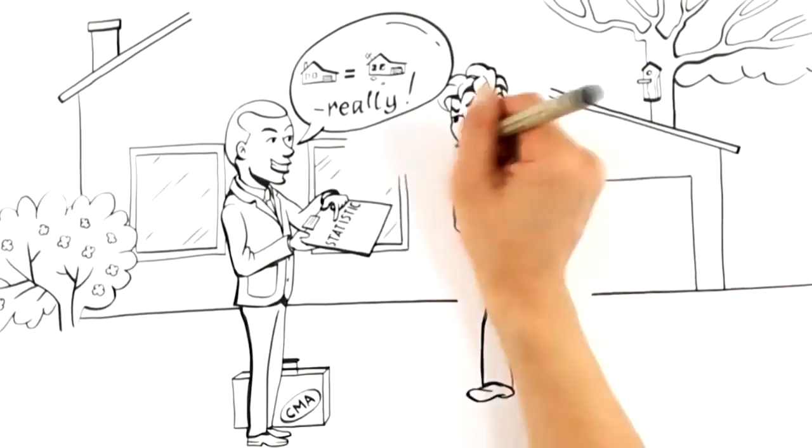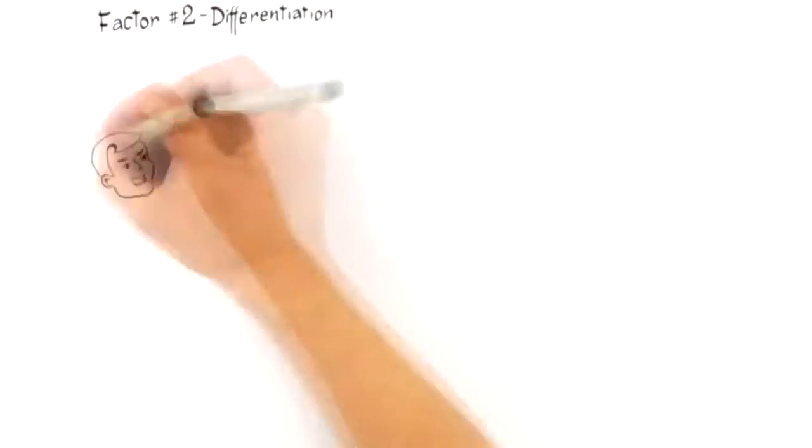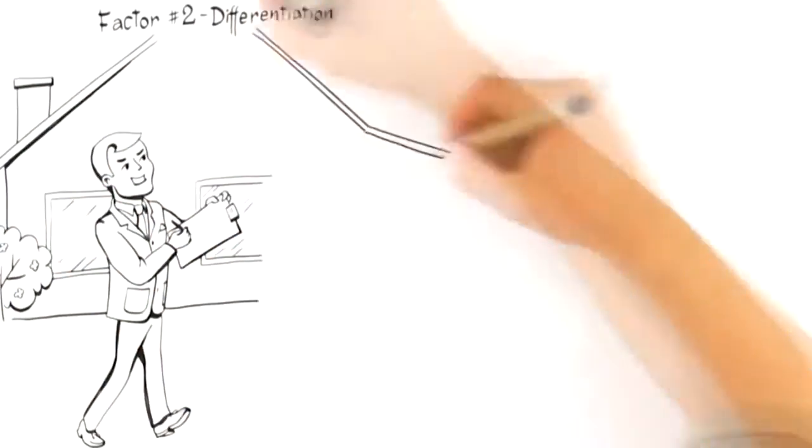So, be wary. If an agent presents you a CMA, it is likely they will not be able to price your home to sell for top dollar. This leads us to factor number two: differentiation.